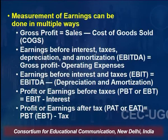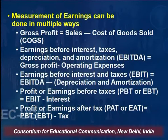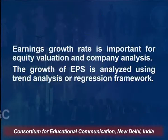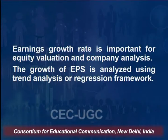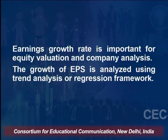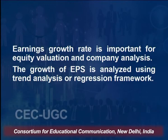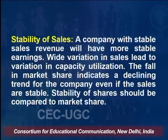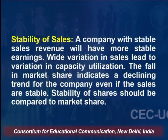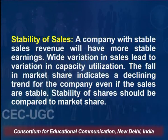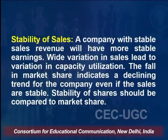Earning after tax — after paying depreciation, amortization, and tax, whatever is left — is available for shareholders to distribute. Stability of sales: a company with stable sales revenue will have more stable earnings, while variation in sales leads to variation in capacity utilization. The fall in market share indicates a declining trend for the company, even if the sales are stable. We are discussing company analysis as part of the EIC approach of fundamental analysis — analyzing economy, industry, and company — to find the intrinsic value of a share.